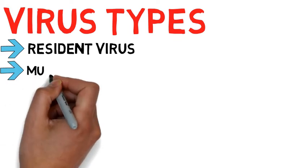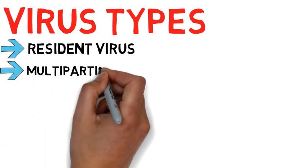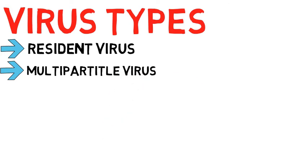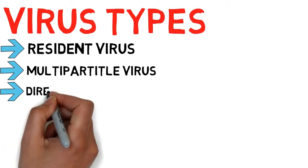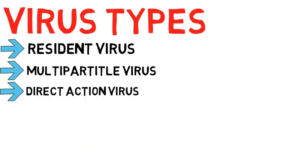Type 2: Multipartite virus. This type of virus can easily spread in your computer system. It is very infectious, performing unauthorized actions in your operating system, in folders, and in other programs on the computer. They have the ability to infect both executable files and the boot sector.